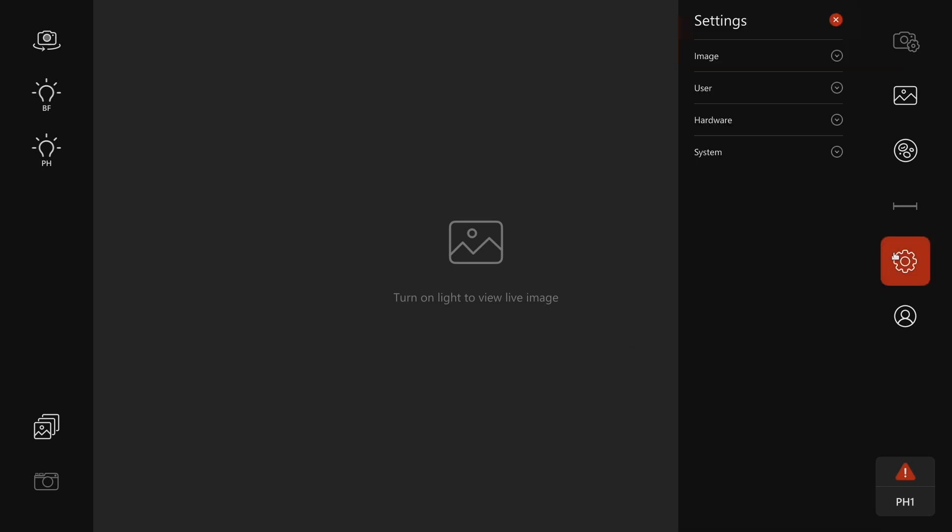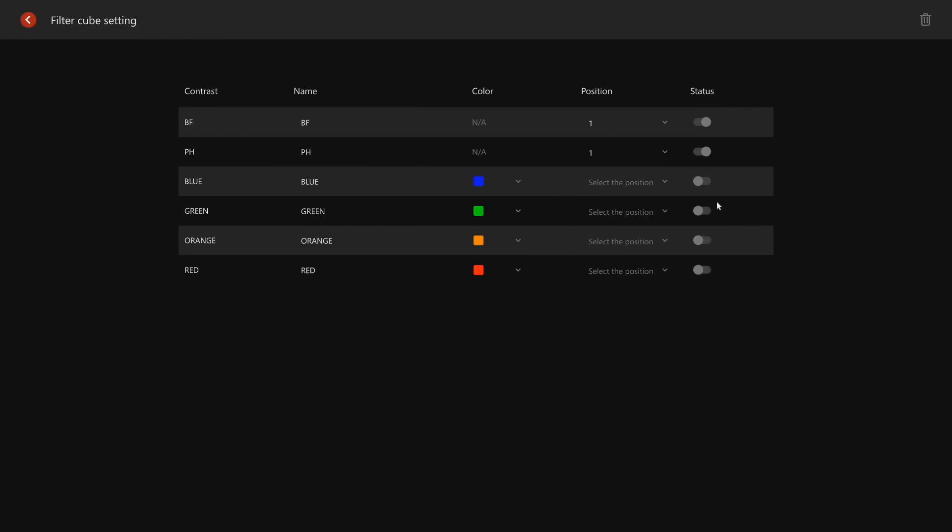To configure the filter cube in Mateo FL software, navigate to Settings on the main screen, then select Hardware and Filter Cube Setting. In Filter Cube Setting, select the position at which you installed the filter cube, then you can configure other parameters such as the name and the color of the channel.